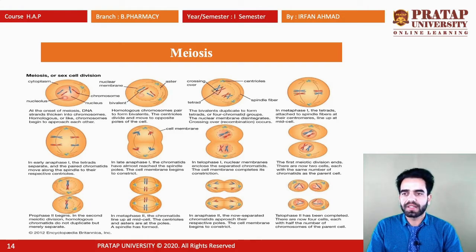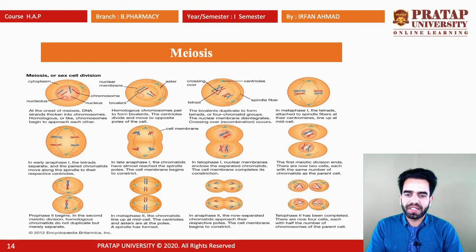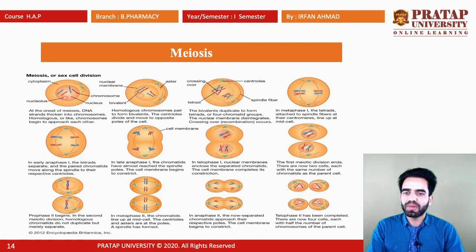The next type of cell division is meiosis, also called sex cell division. There are two divisions in meiosis: equational and reductional. When meiosis starts, DNA strands thicken and convert into chromosomes. Homologous chromosomes, also called like chromosomes, begin to approach each other. They then pair to form bivalents.